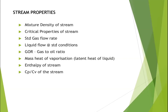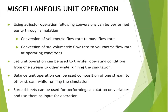HYSYS has miscellaneous unit operations that are very useful. When you have a mass flow rate and need to find the corresponding volumetric flow rate through iteration, the Adjuster unit operation does the iteration automatically. You simply define the final required value and specify which parameter needs to be adjusted — the Adjuster will quickly determine the result without manual trial and error.